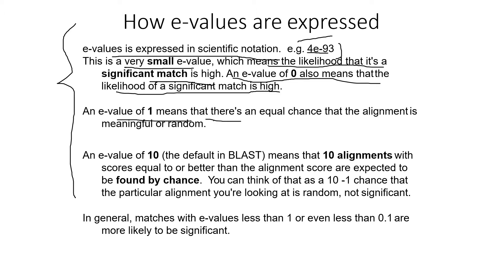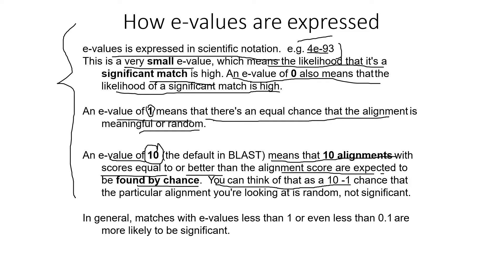Lower the E-value, higher the significance. An E-value of one means there's an equal chance that the alignment is meaningful or random — not very reliable. An E-value of 10 means that 10 alignments with scores equal to or better than the alignment score are expected to be found by chance, so it's a 10-to-1 ratio that the match is random. In general, matches with E-values less than 1, or even less than 0.1, are more likely to be significant.